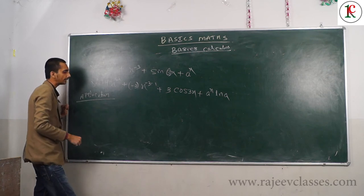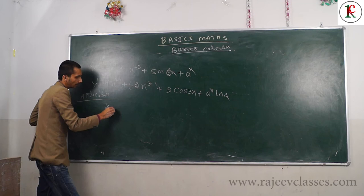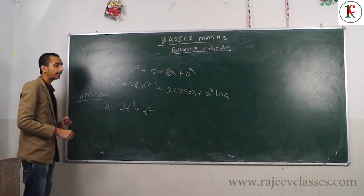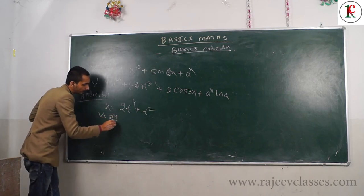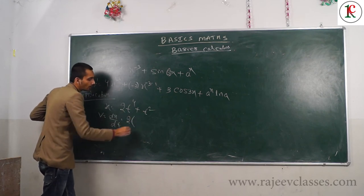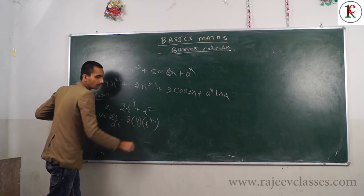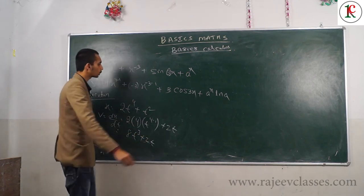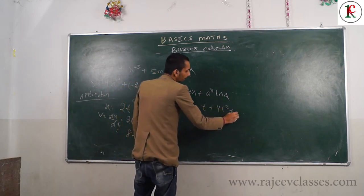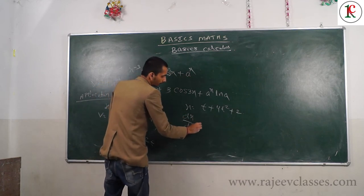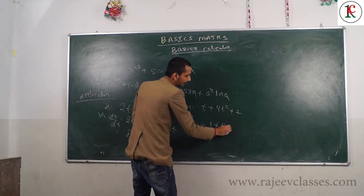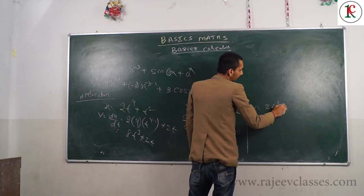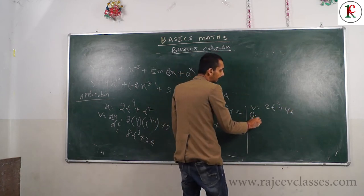Now let's see the application in physics. Suppose position is given by X equals 2t to the power 4 plus t squared. To find velocity, we differentiate: DX/DT equals 8t cubed plus 2t. If velocity is given as 2t squared plus 4t, and we need acceleration, we differentiate velocity: DV/DT equals 4t plus 4.